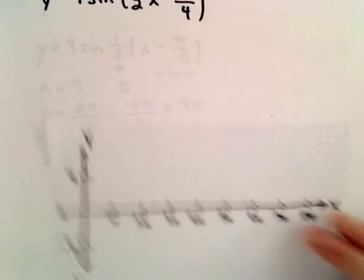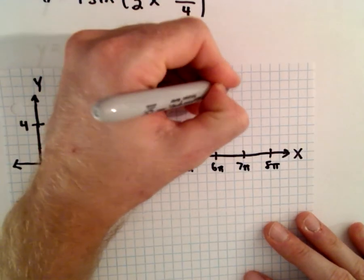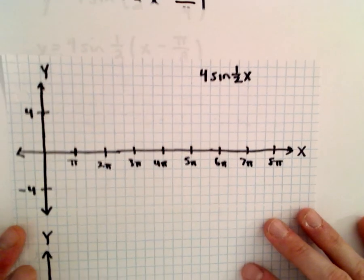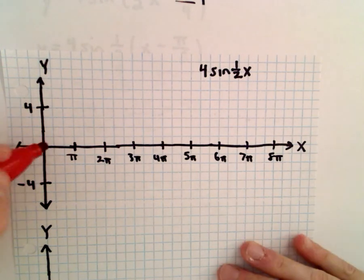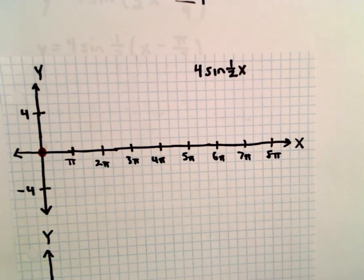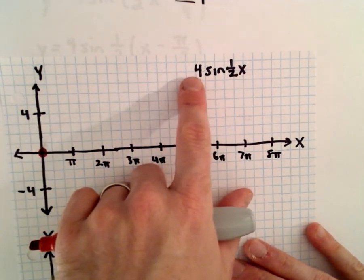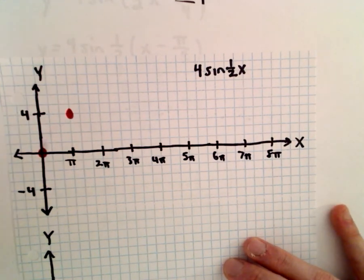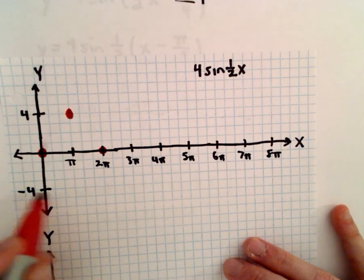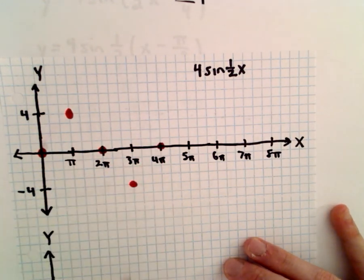Well, if we substitute in x equals 0, so again, we're going to graph 4 times sine of 1 half x. If you substitute in x equals 0, you'll get sine of 0, which is 0. So at 0, we're at 0. Sine normally increases. And since we have a positive number out front, it still will increase. So at pi, we're at positive 4. At 2 pi, we're back at the middle, or 0. At 3 pi, we'll be at negative 4. At 4 pi, again, back at 0.